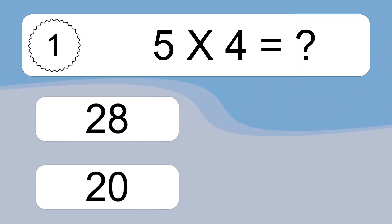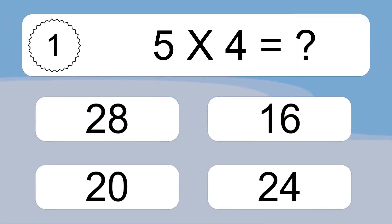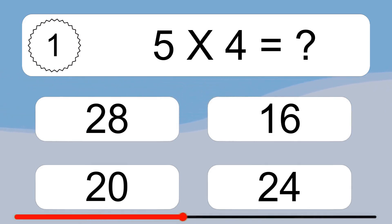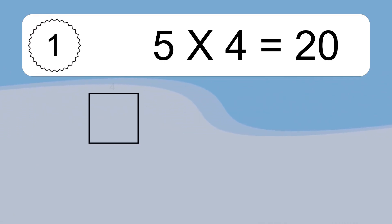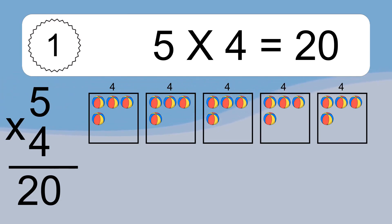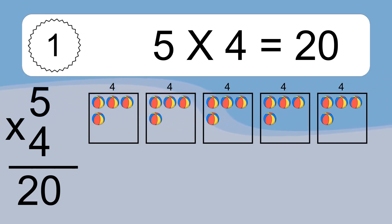5 times 4 equals what? 5 times 4 equals 20. We have 5 boxes, and each box has 4 colorful balls inside. If you count all the balls in all the boxes together, you will have 5 times 4 balls. This equals 20 balls.